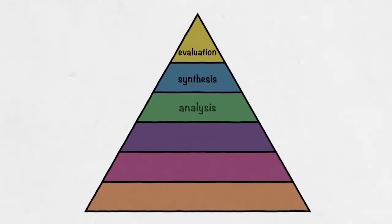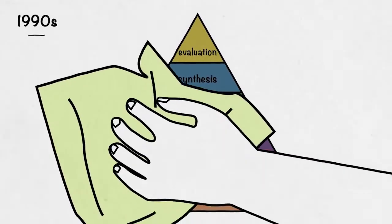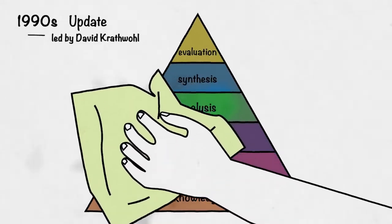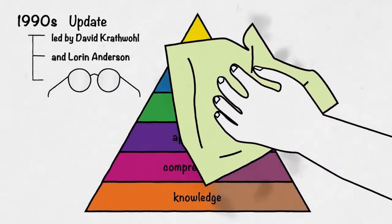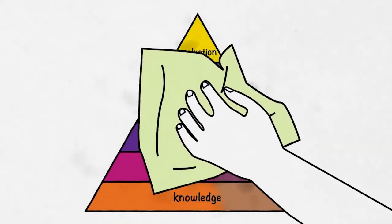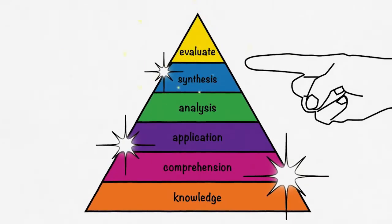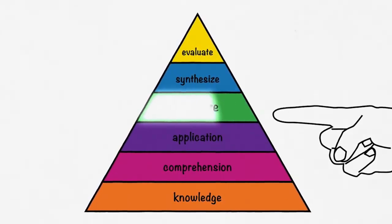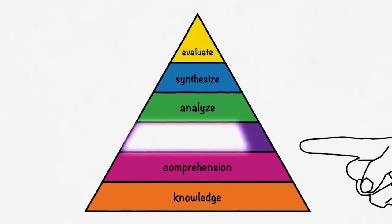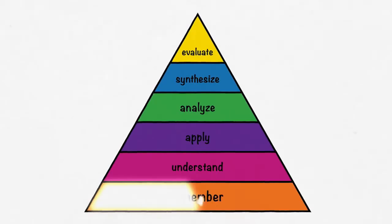Some have likened the model to a mountain or a stairway where teachers set learning objectives and design learning experiences to guide students to higher levels of thinking. The taxonomy has become an important model for structuring students' learning processes. In the 1990s, Bloom's taxonomy was updated by a group led by David Krathwohl, one of the original authors, and Lauren Anderson, a former student of Bloom's. To make the model relevant to 21st century learning, one of their main changes was updating the nouns associated with each level to action-oriented verbs. This differentiation positions thinking as an action-based process rather than one of passive acquisition.